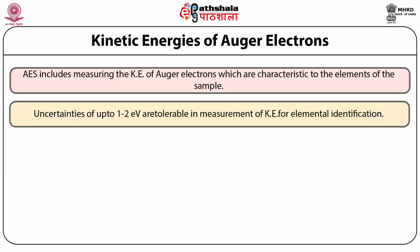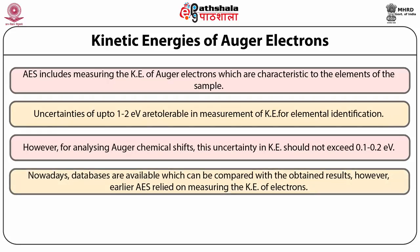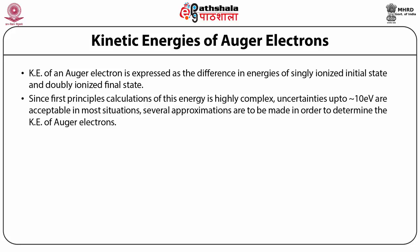Uncertainties of 1 to 2 electron volts are tolerable in measurement of kinetic energy for elemental identification. However, for analyzing the Auger chemical shift, this uncertainty should not exceed 0.1 to 0.2 electron volts. Nowadays, databases are available which can be compared with obtained results. Earlier, AES relied on measuring the kinetic energy of electrons. Approximations are made in order to determine the kinetic energy of Auger electrons.